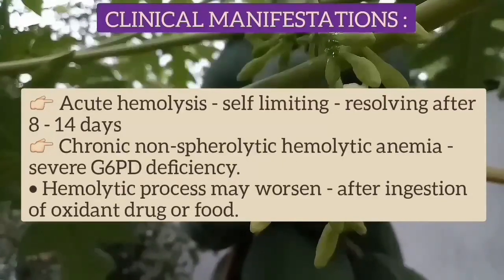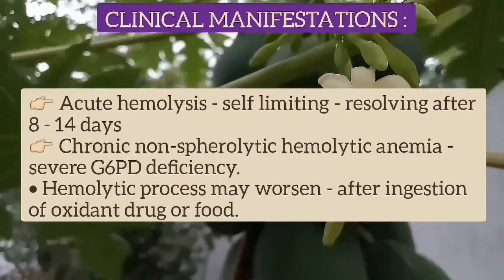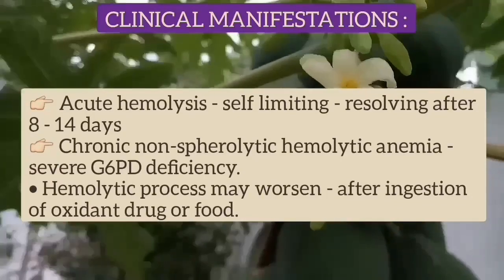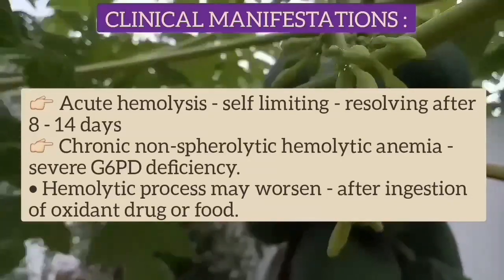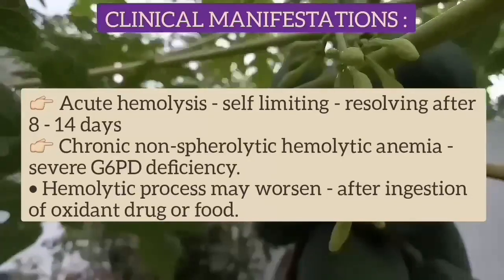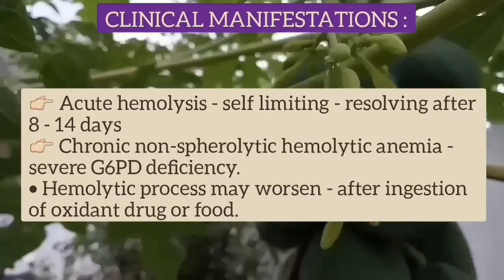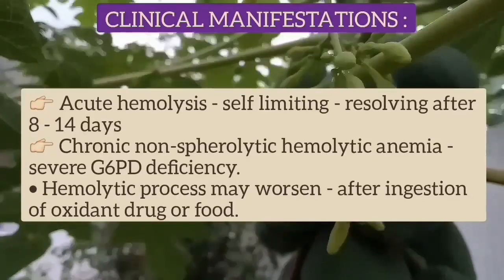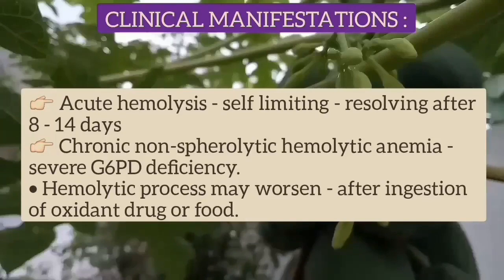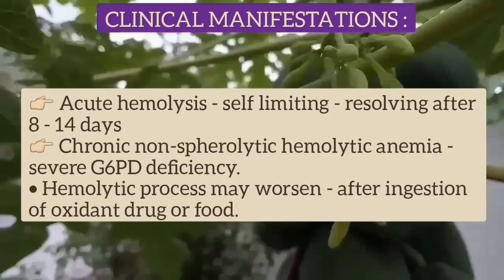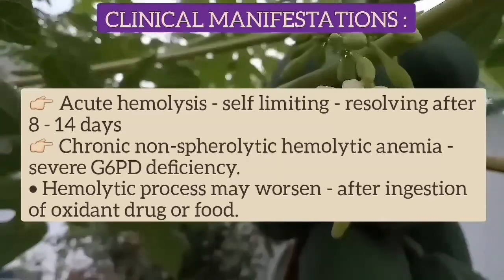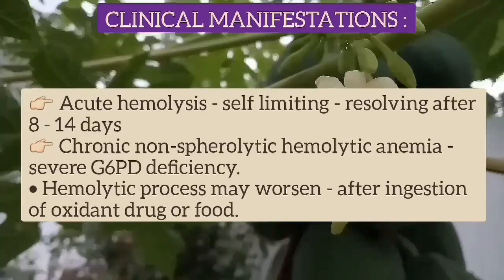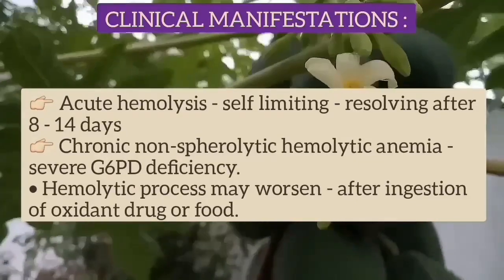Acute hemolysis is self-limiting, resolving after 8 to 14 days due to compensatory production of young RBCs which have high levels of G6PD. G6PD deficiency can also present as chronic non-spherocytic hemolytic anemia, which occurs in severe deficiency. This is a rare condition, and in these cases the hemolytic process may worsen after ingestion of oxidant drugs or foods.